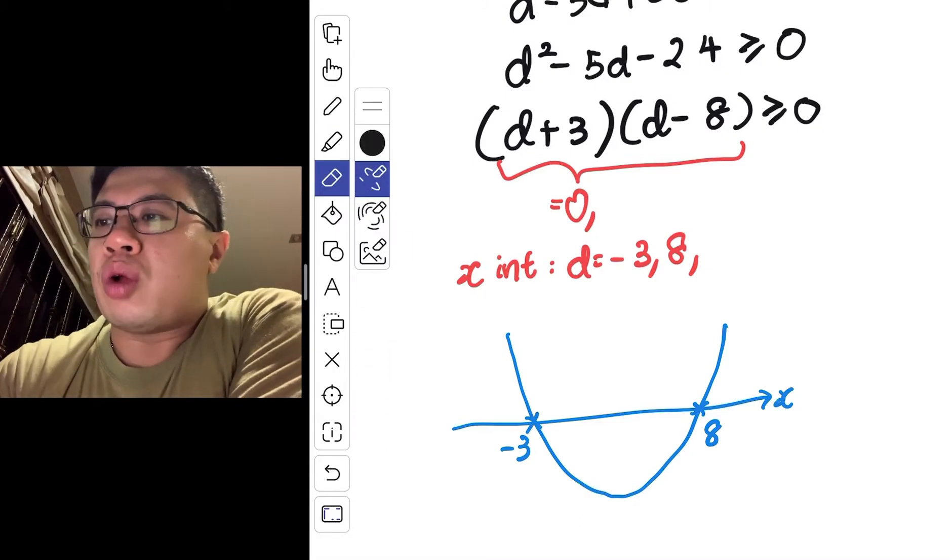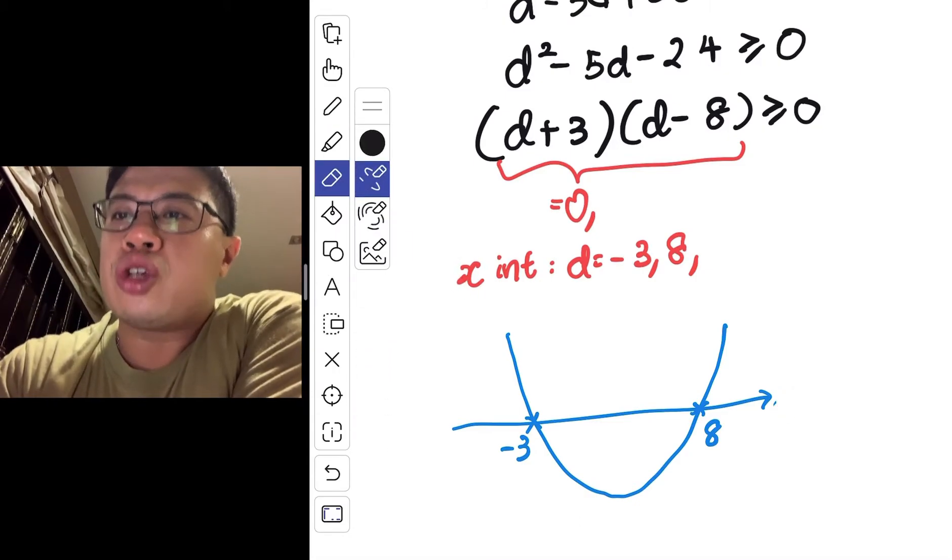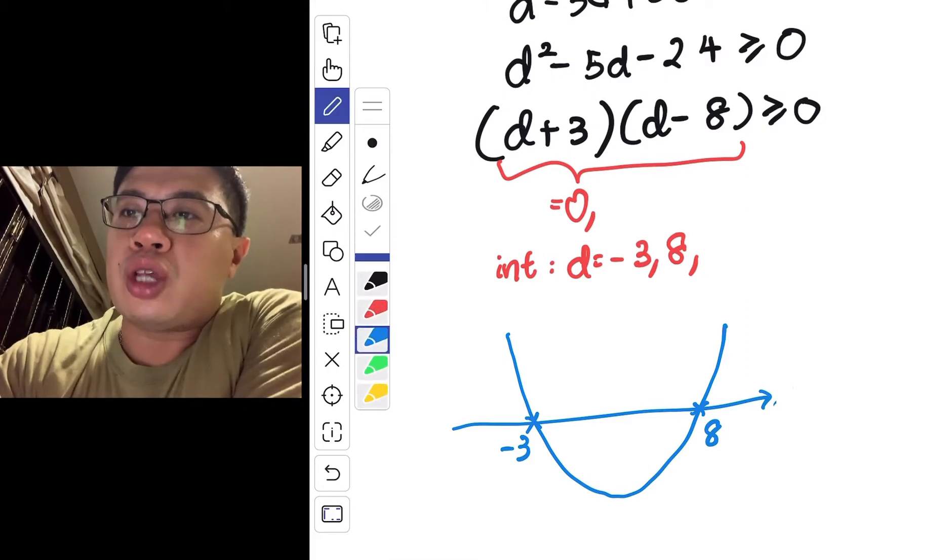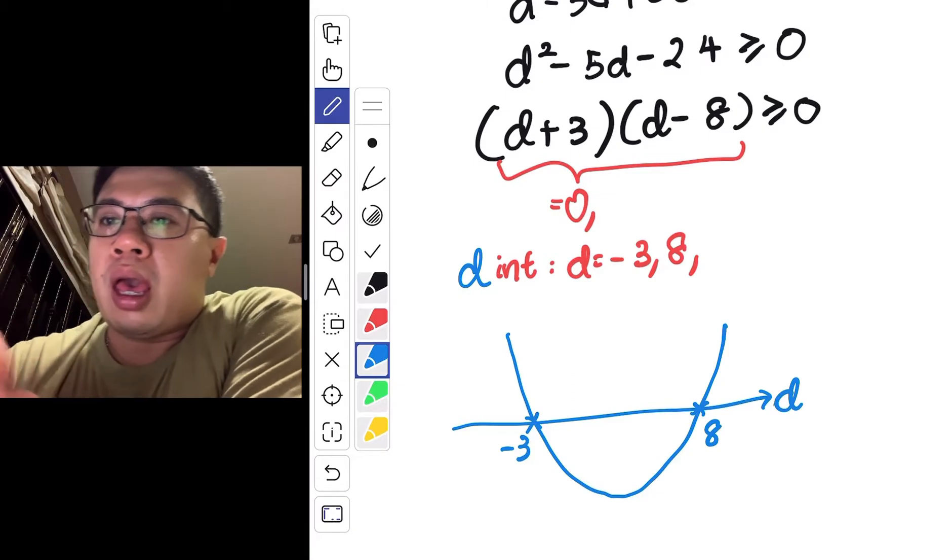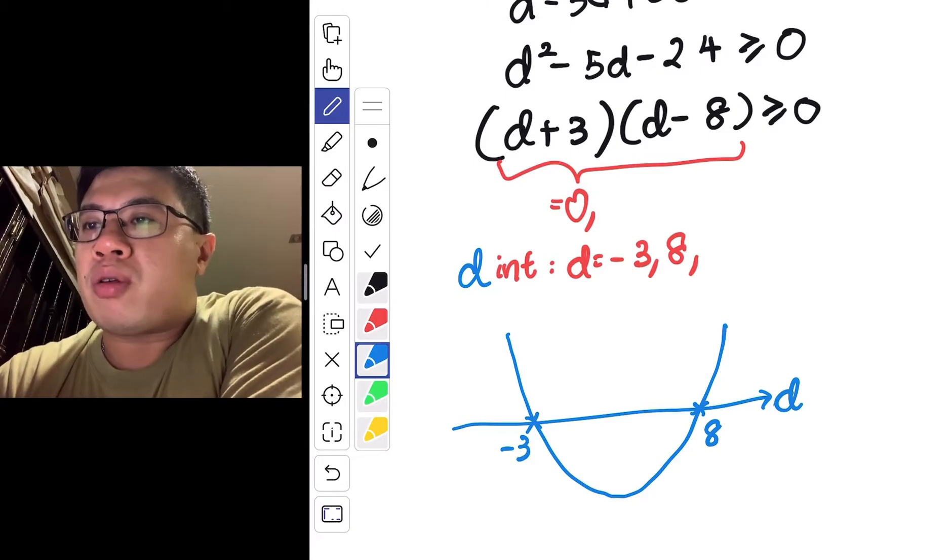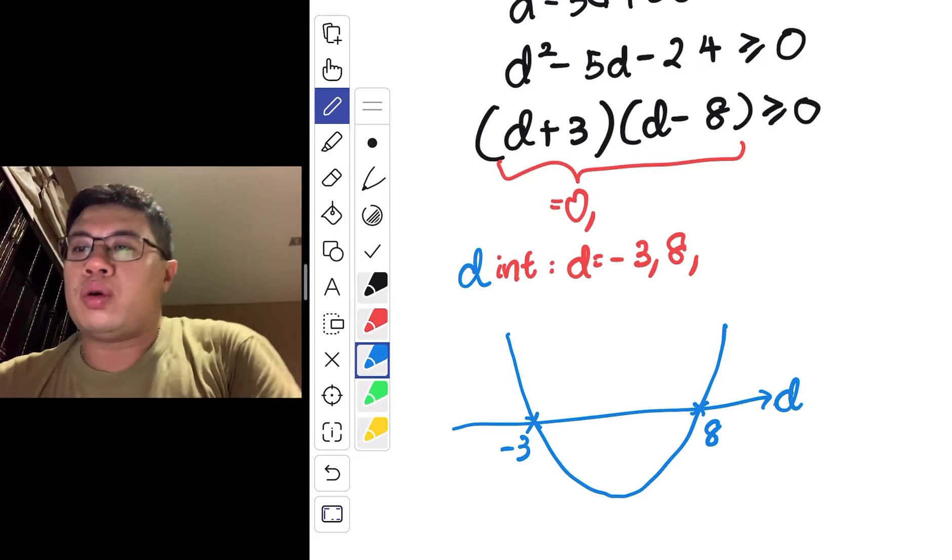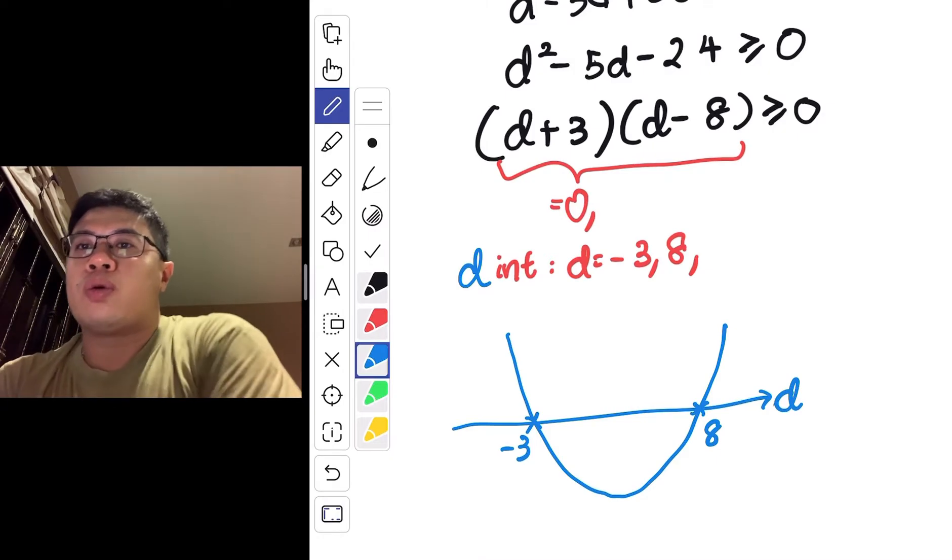I mean, in this case, it's not really the x-axis. So maybe I shouldn't call it the x-intercepts. I should call it the d-intercepts. And I want to find the region where my graph is more than equals to 0.